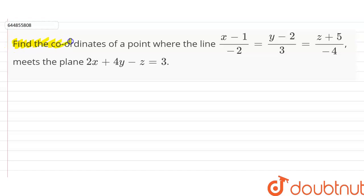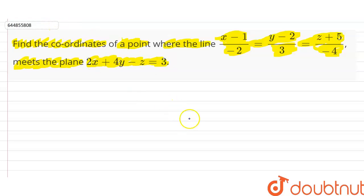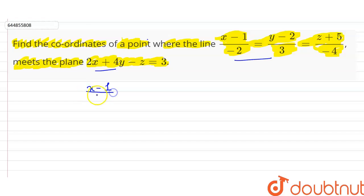The question says: find the coordinates of a point where the line with equation (x-1)/(-2) = (y-2)/3 = (z+5)/(-4) meets the plane with equation 2x + 4y - z = 3. So we have to find the point where this line meets this plane.